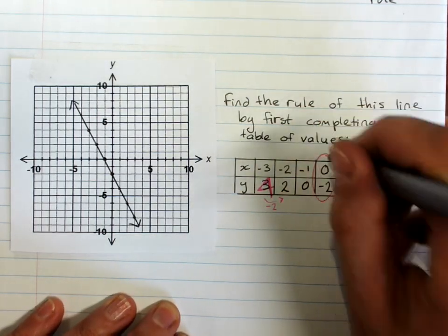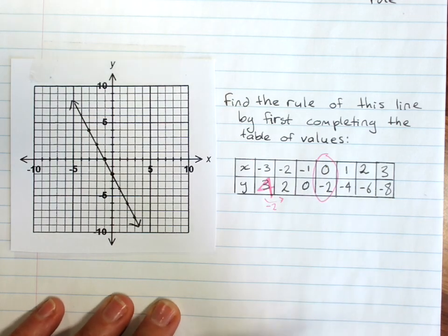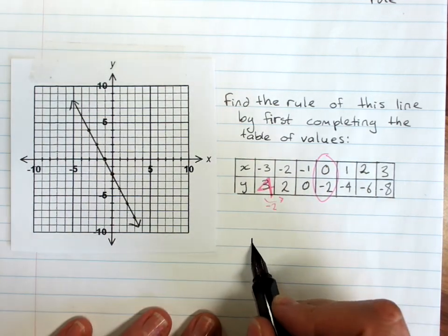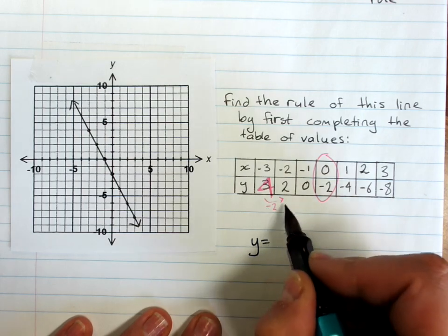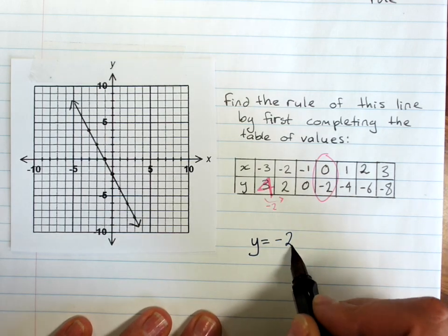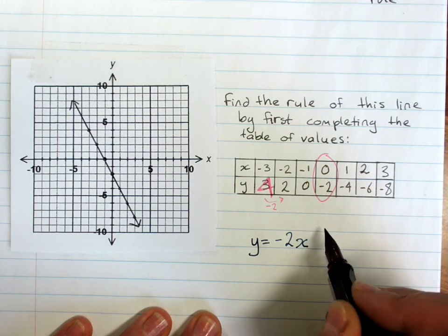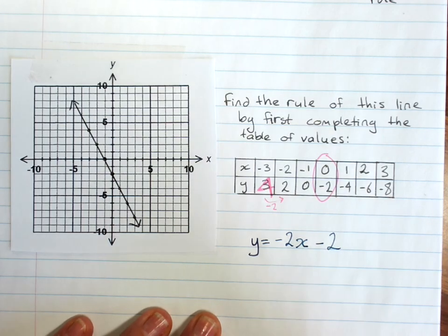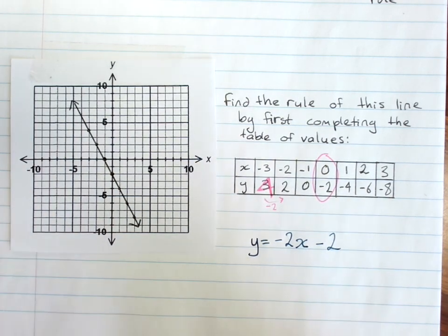And when x is zero, y is minus two. So the rule is negative two is the number in front of x and the number on its own is negative two. You've made the rule.